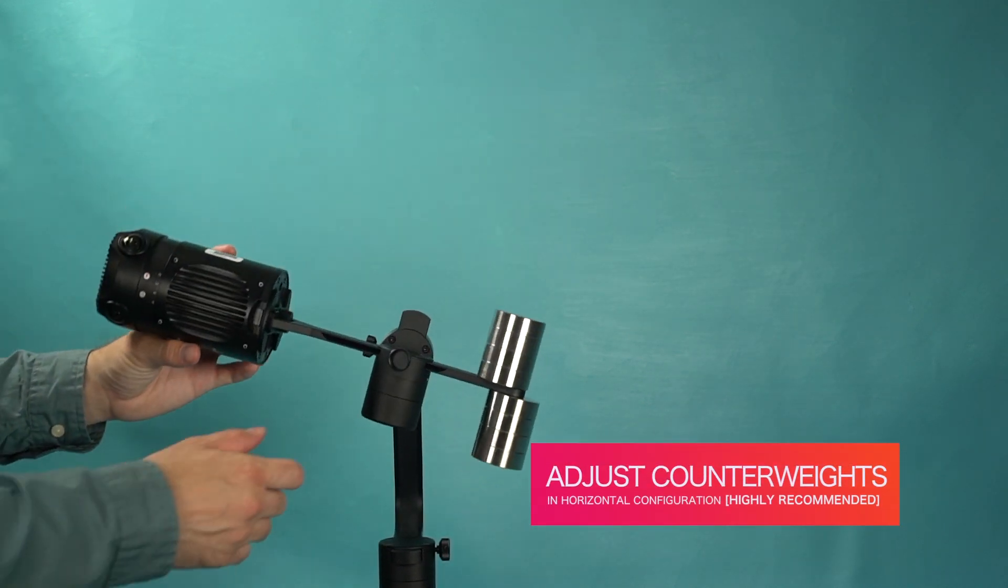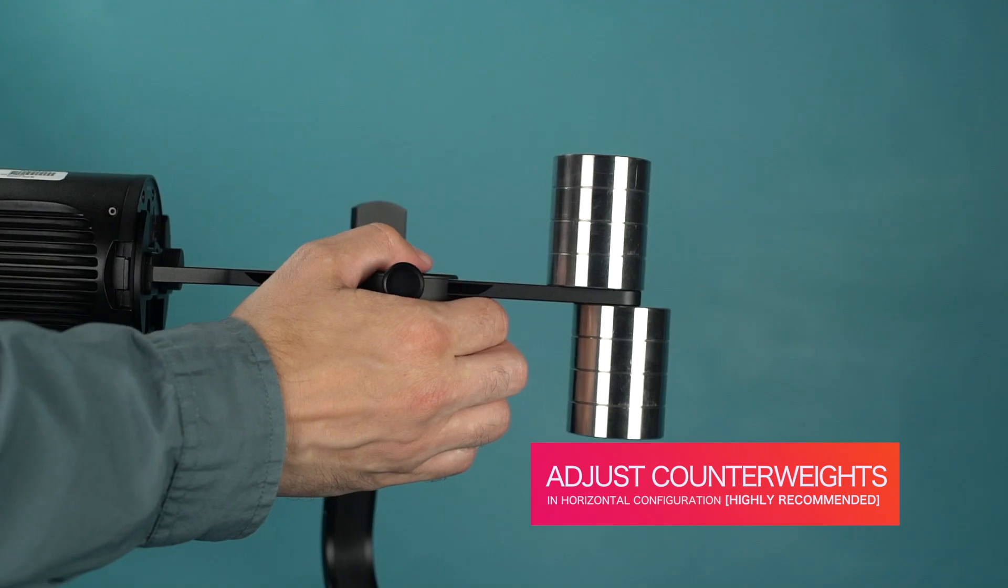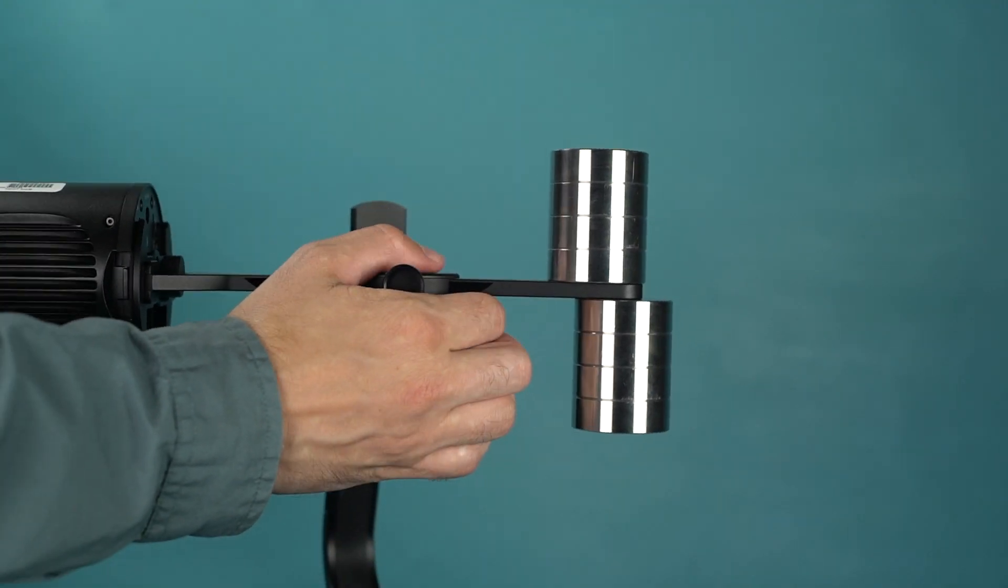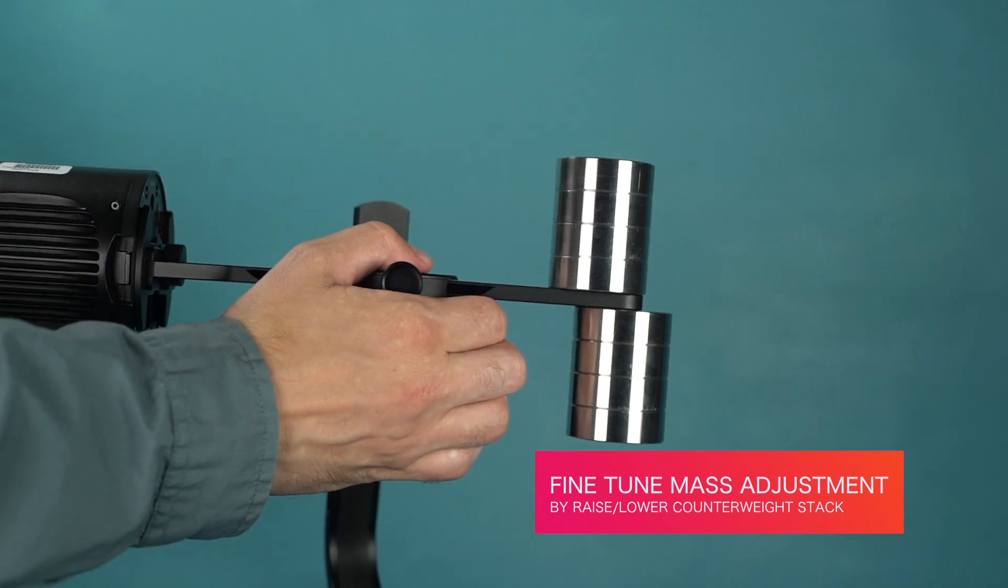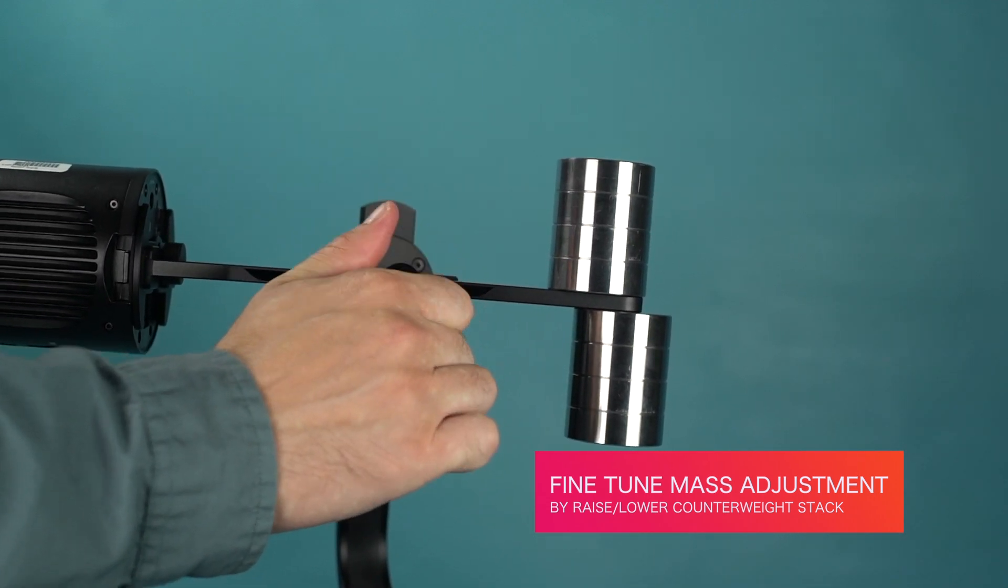It is highly recommended to only adjust the counterweight stack when the camera and counterweight stack are horizontal to the horizon. By raising and lowering the counterweight stack, you'll be able to fine tune the mass adjustment.